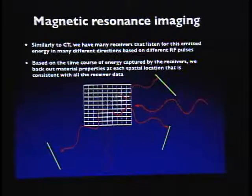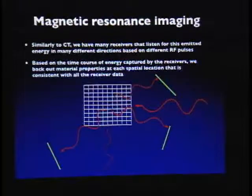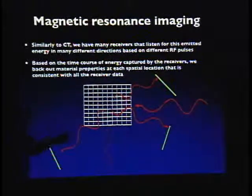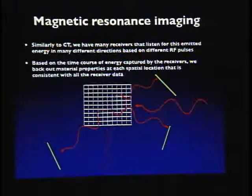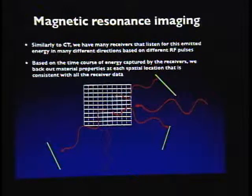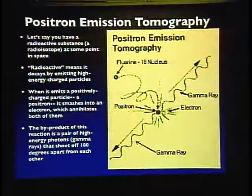Not only will the time course of energy emission tell you about the material, but you can also detect energy from different orientations. Energy coming out in a direction about 90 degrees off from the transmitter will be relatively weak, but you can still detect it. Now let's talk about PET.